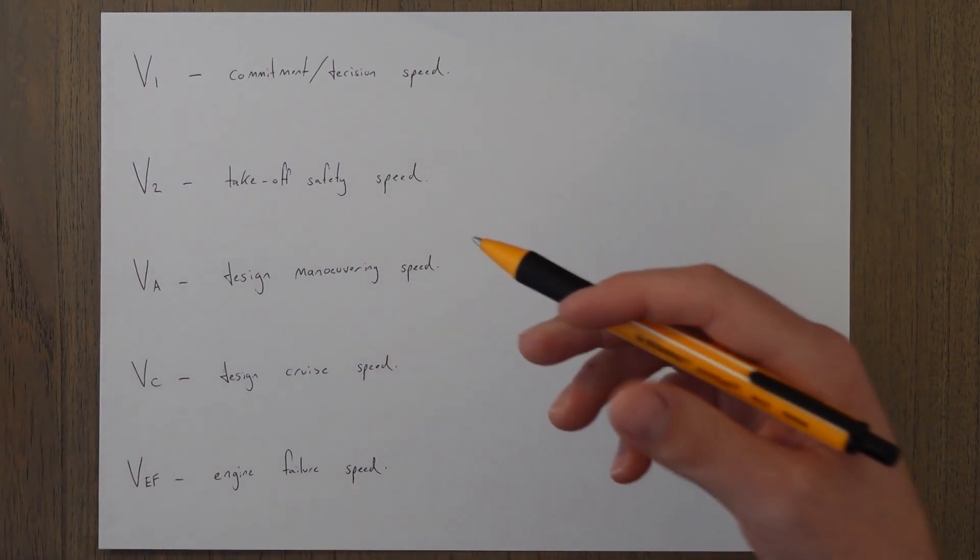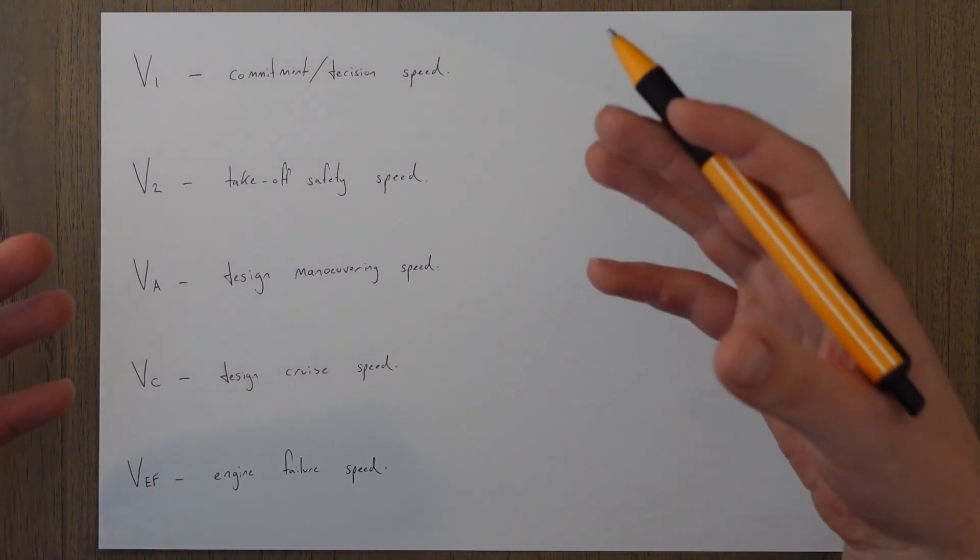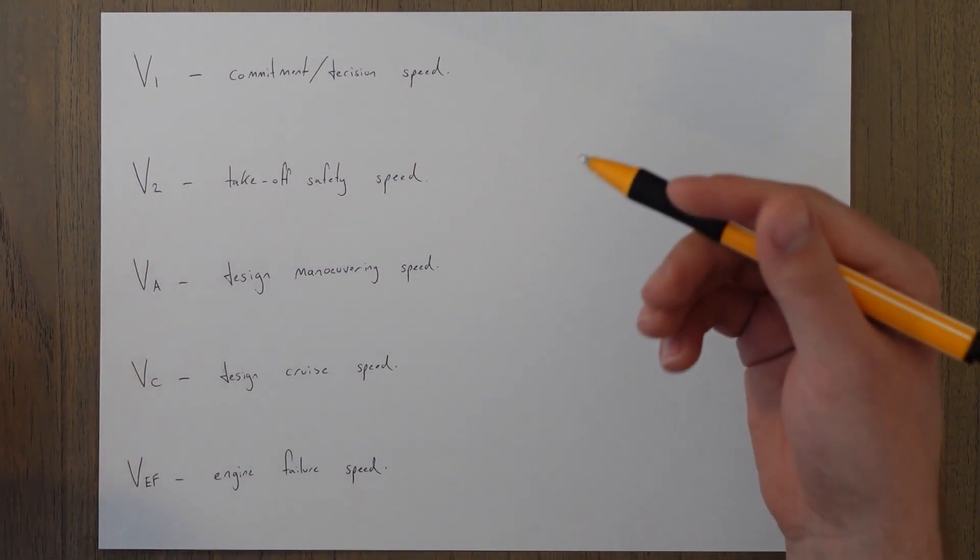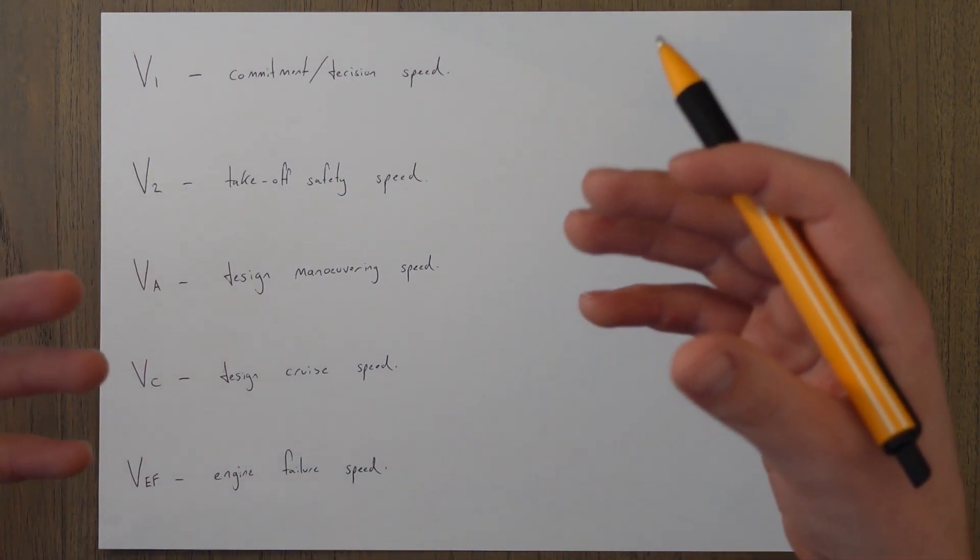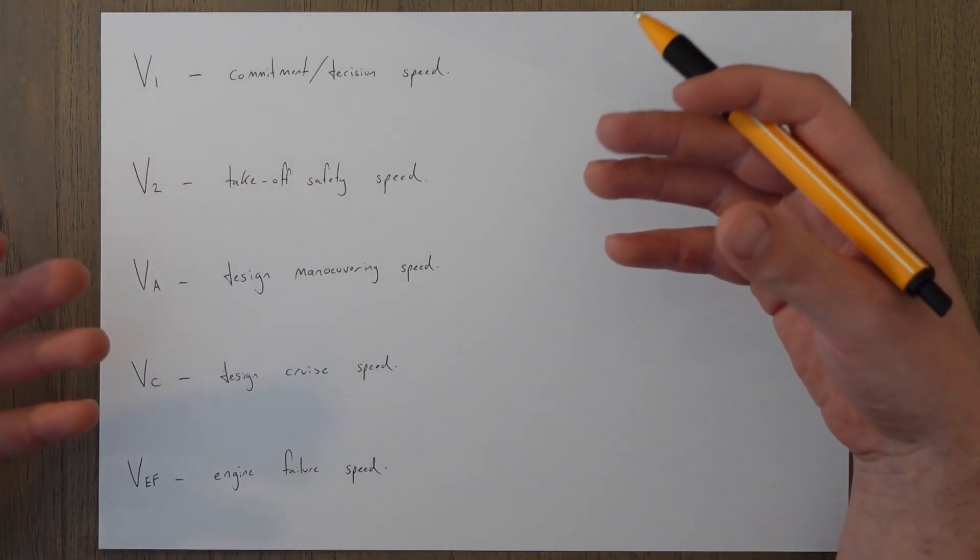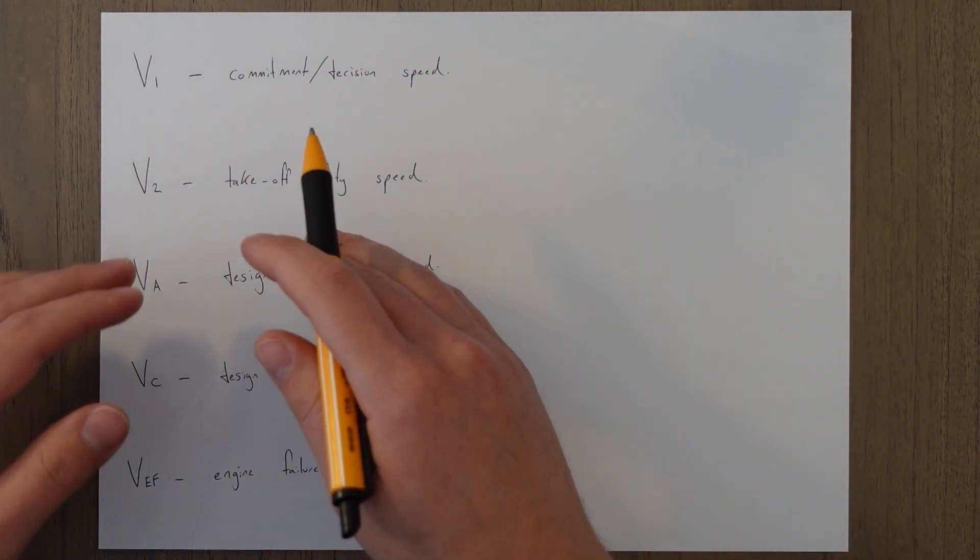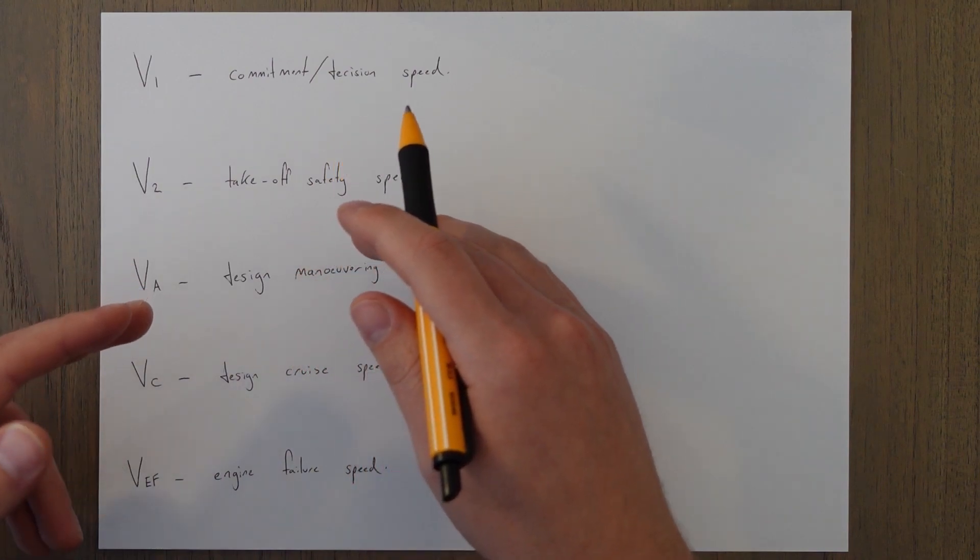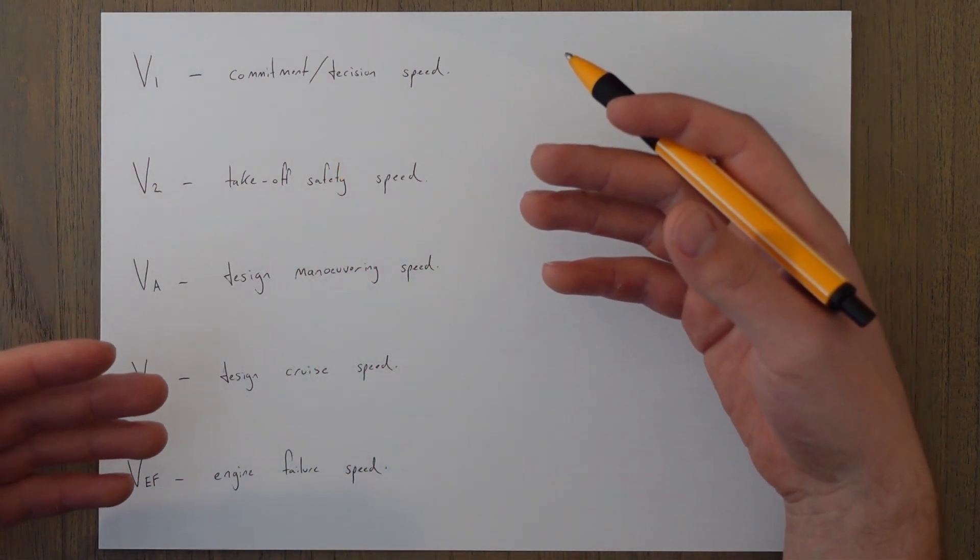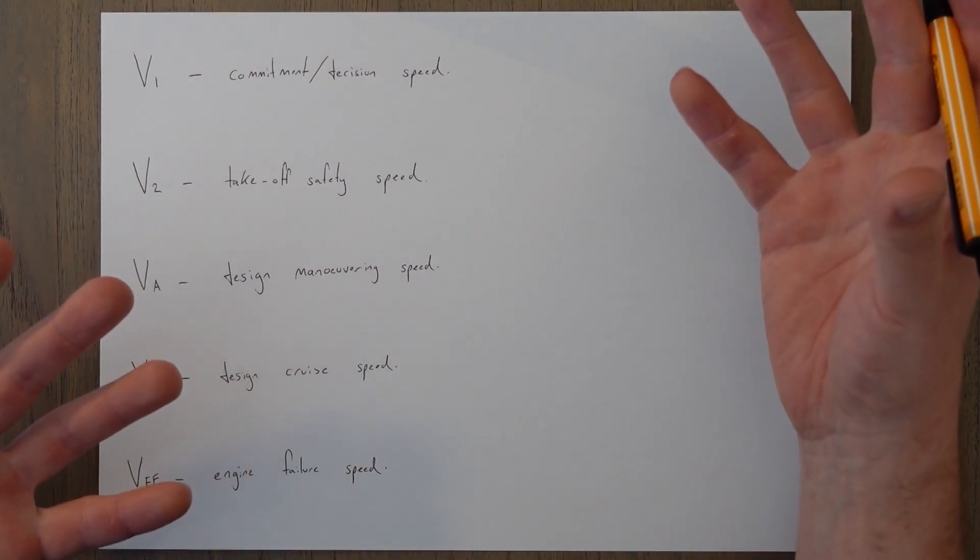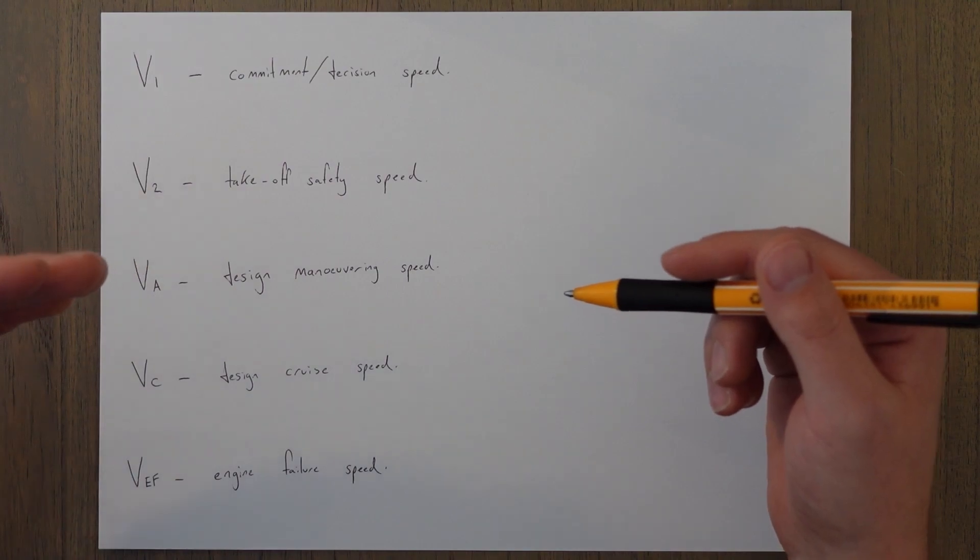V2 is what we call a takeoff safety speed. This is a speed at which the aircraft may safely climb with one engine inoperative while still maintaining control over the aircraft and at a sufficient margin above the stall speed. Normally we aim for a slightly higher speed than this for a normal two-engine climb, but in an engine failure situation which we practice a couple of times a year in the simulator, we would target V2 as the initial climbing speed.